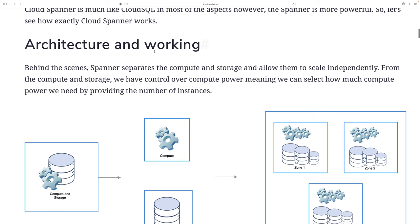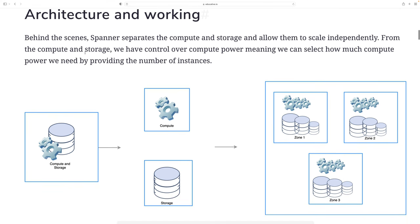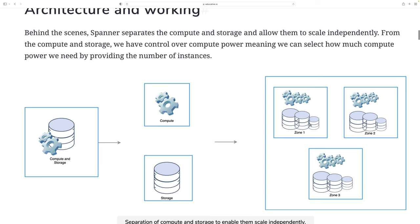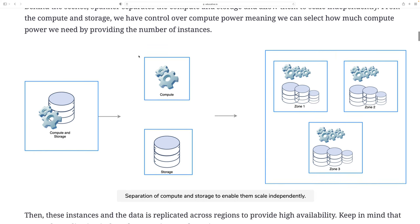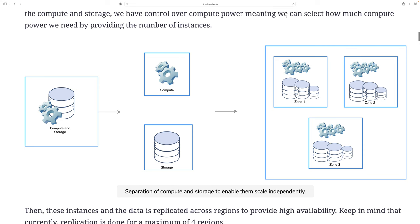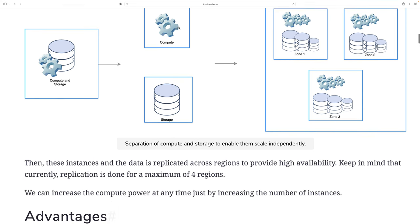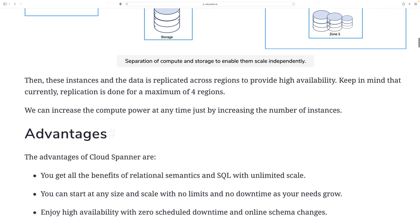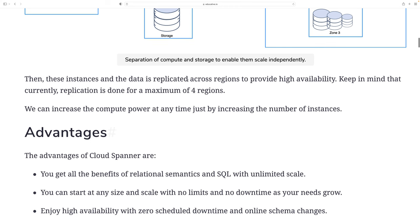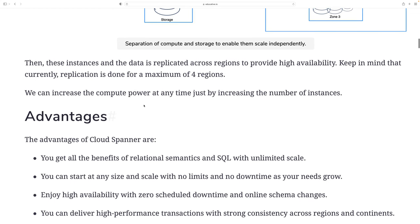In terms of architecture and working, behind the scenes Cloud Spanner separates compute and storage, allowing them to scale independently. The data is divided at each node level, so you have control over compute power — meaning you can select how many instances you need. These instances and data are then replicated across regions to provide high availability. Currently, an application supports a maximum of up to four regions, and you can increase compute power at any time by increasing the number of instances.